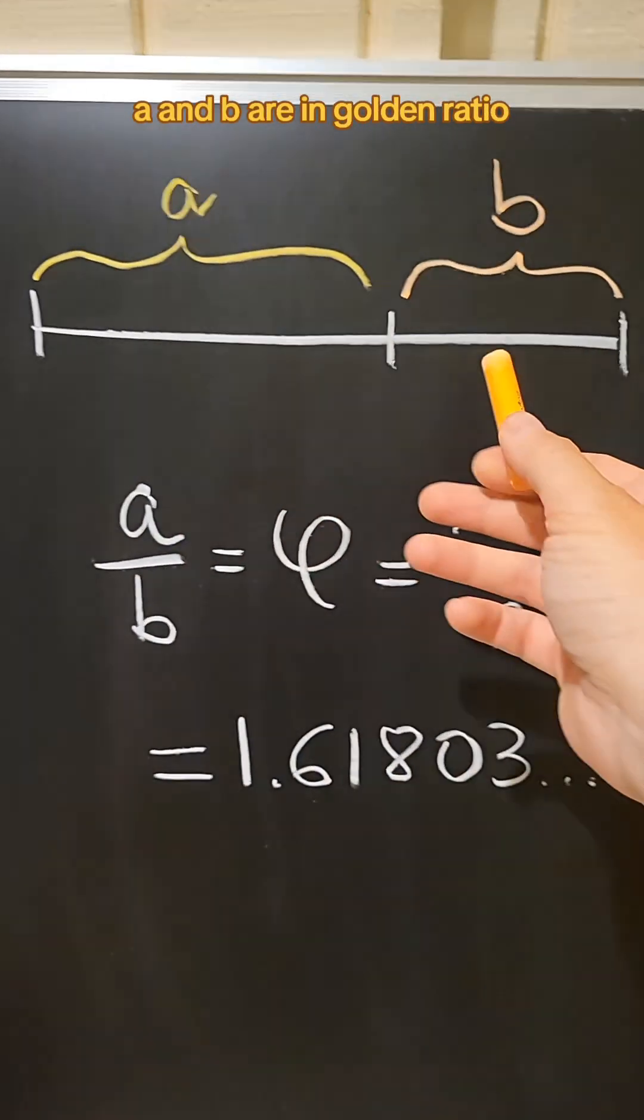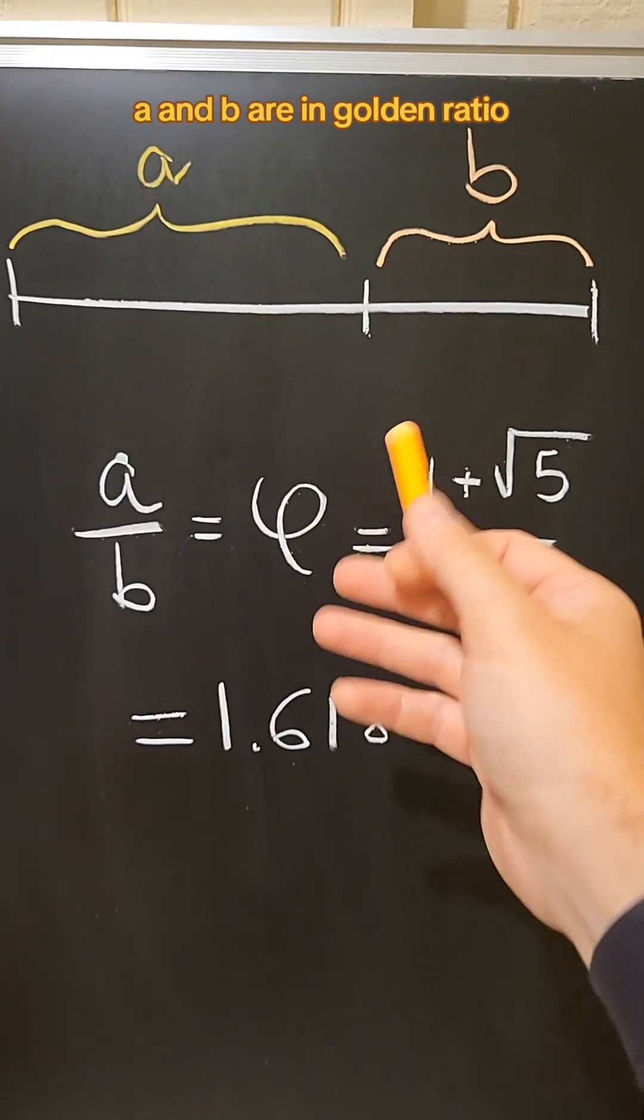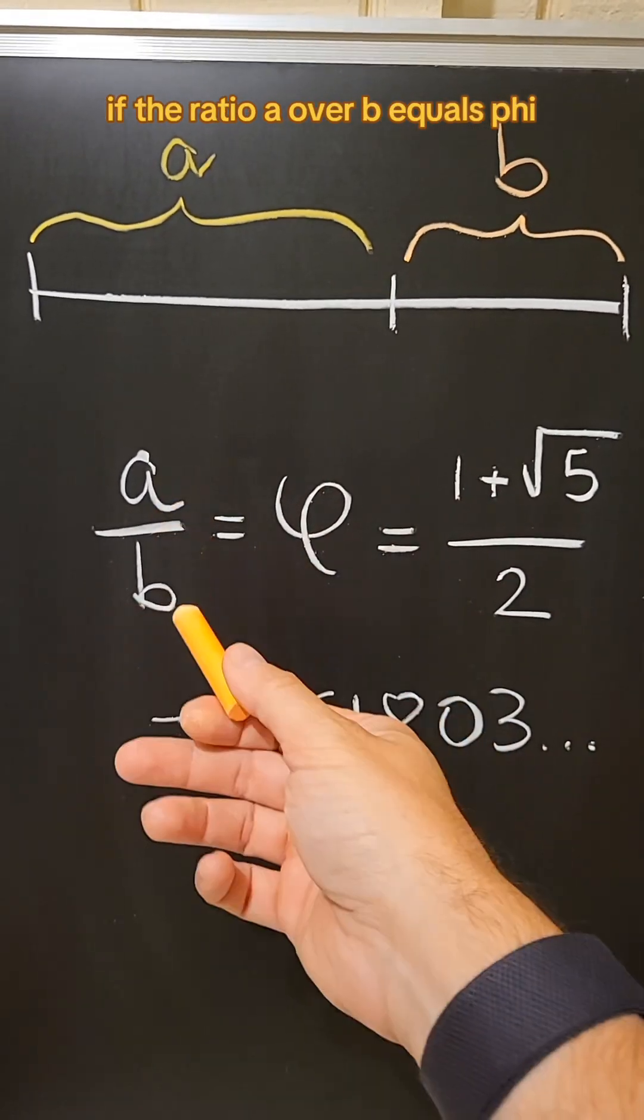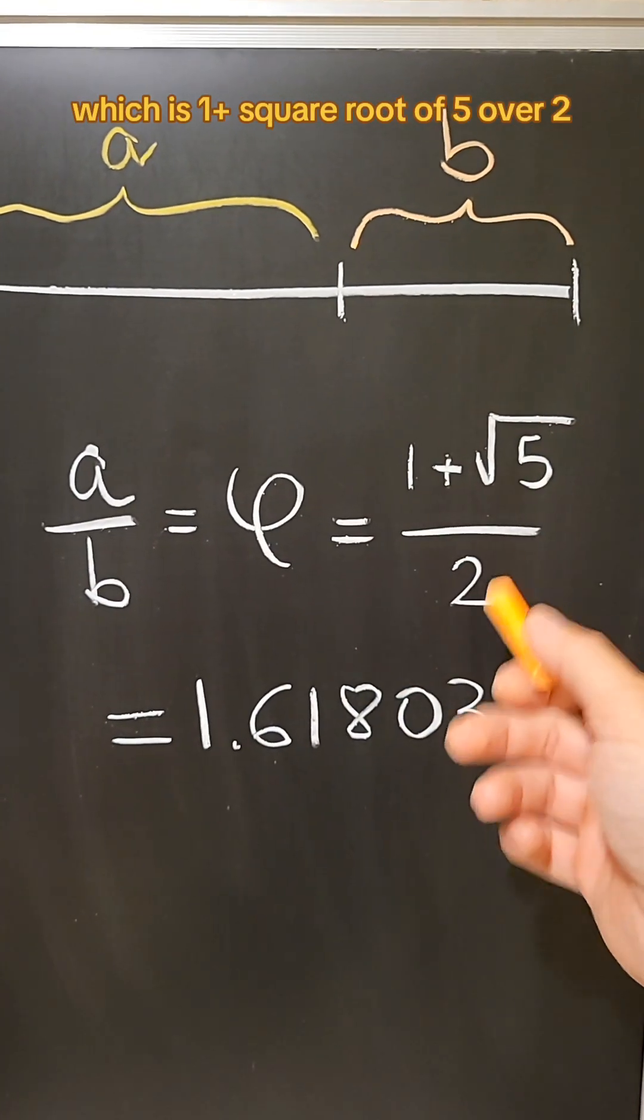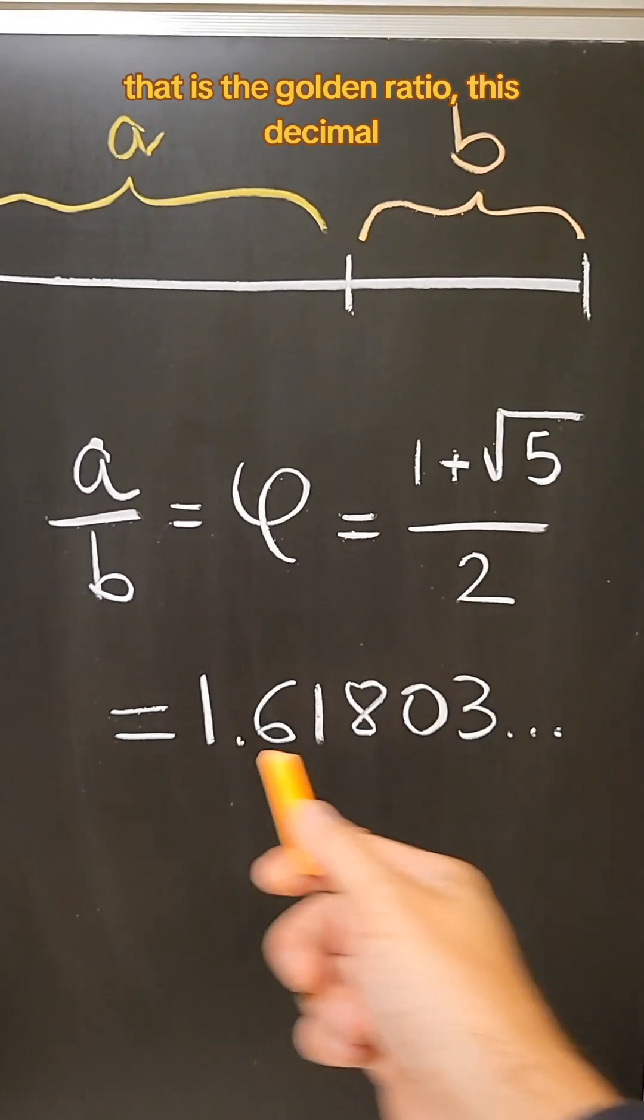We say that two quantities, A and B, are in golden ratio if the ratio A over B equals phi, which is 1 plus square root of 5 over 2. That is the golden ratio, this decimal 1.6180...